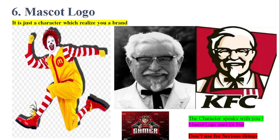The sixth type of logo is the mascot logo. It is just a character that makes you recognize a brand. Look here at the McDonald's clown — when you see this picture as a mascot logo, you memorize and realize it is related to McDonald's. This clown is used as a logo character for McDonald's. KFC also uses a picture — a character — as their logo. This type of logo is called the mascot logo. The character sticks with you. Use this type of logo for fun brands and do not use it for serious things.